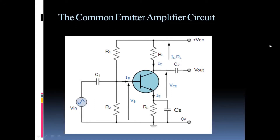The name 'common emitter' indicates that the emitter terminal is common to both the input and output sides. Since this is an amplifier circuit, we are applying the input at the input side and observing the output across the collector terminal. This output is the amplified version of the input — the strength of the output signal is increased with respect to the input signal.